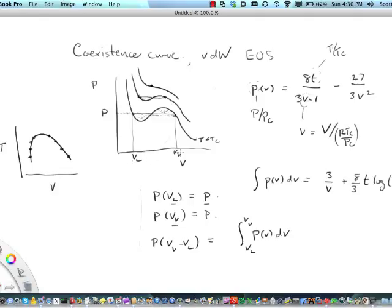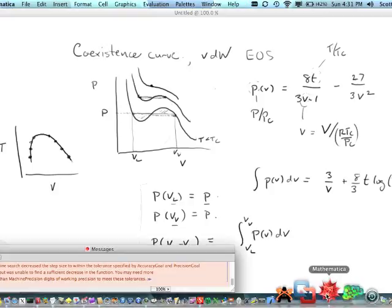but then when you march through temperatures, it would make sense to use the value of the previous P, VL, and VV as your initial guess for the next temperature value, and to kind of walk along the coexistence curve by using the previous values as the initial guesses for the next value. And that is something that there are some facilities in Mathematica that make that very easy to automate.